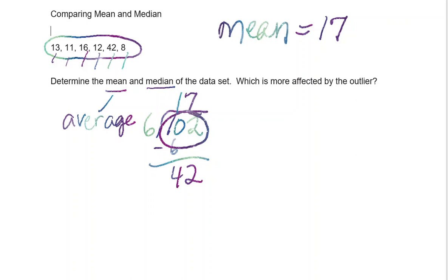Let's just look at what would the mean be without the 42. So if I take 102 and subtract 42, I would get 60. So if we just did the mean of 13, 11, 16, 12, and 8, we would have 60 divided by 5, which is 12. So that's a pretty big difference in the mean when you removed only one value.